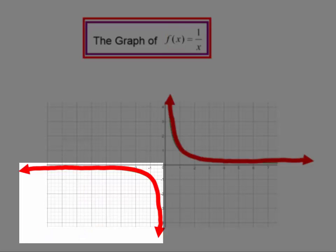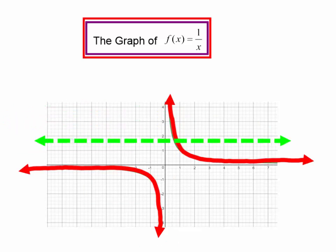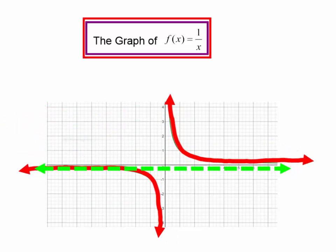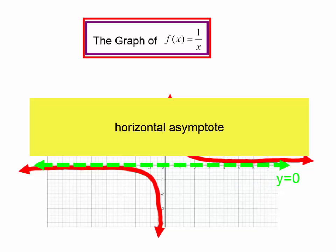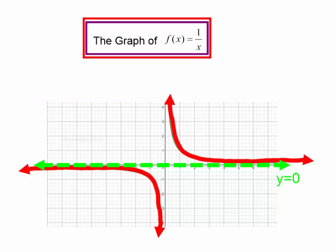Let's talk about the asymptotes. We have a horizontal asymptote, y equals 0. Our graph never, ever touches the line y equals 0. I've talked more about that in another video, so let's carry on.